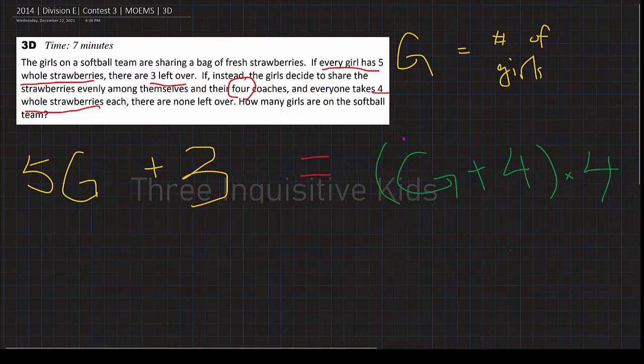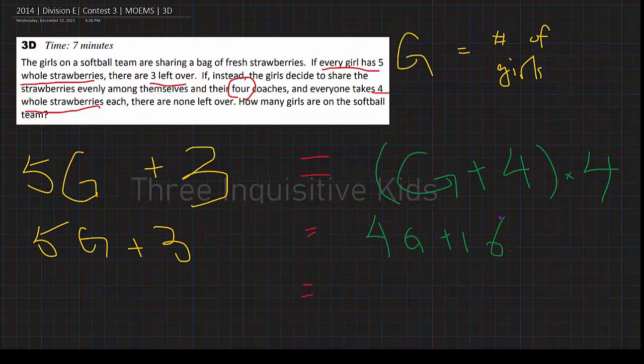Now we can simplify. The left side will stay the same because we can't really continue to simplify that any further. But if we look closely at the right side, we can use the distributive property to factor the four in. So that would be 4G plus 16, 4 times G and 4 times 4.